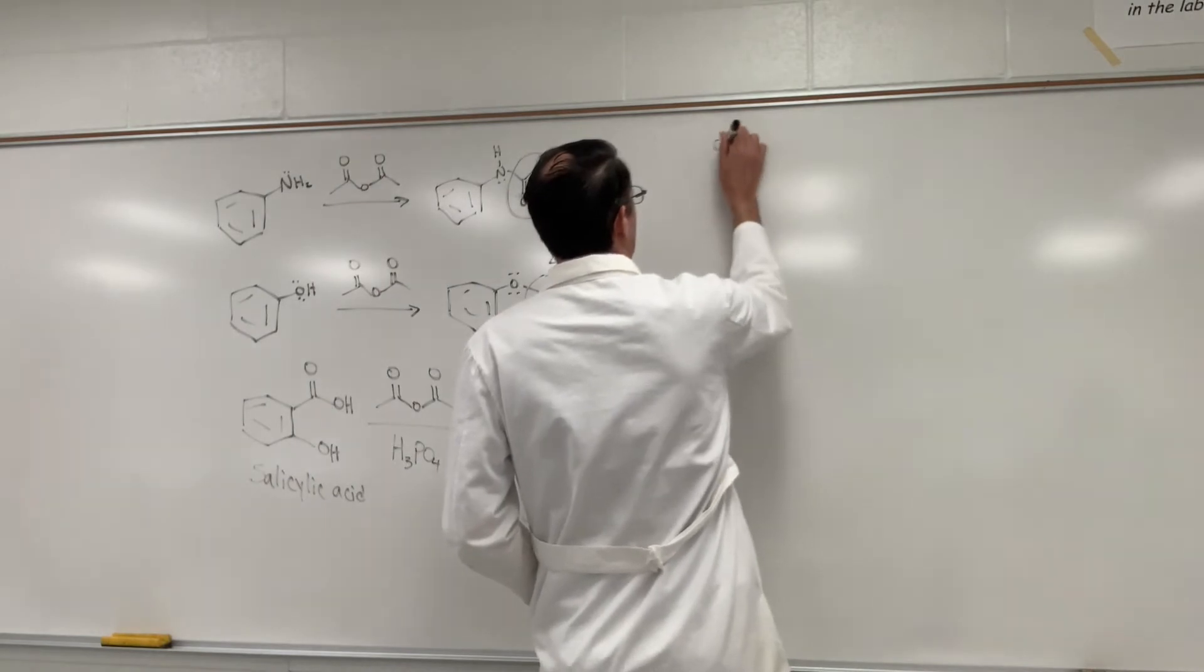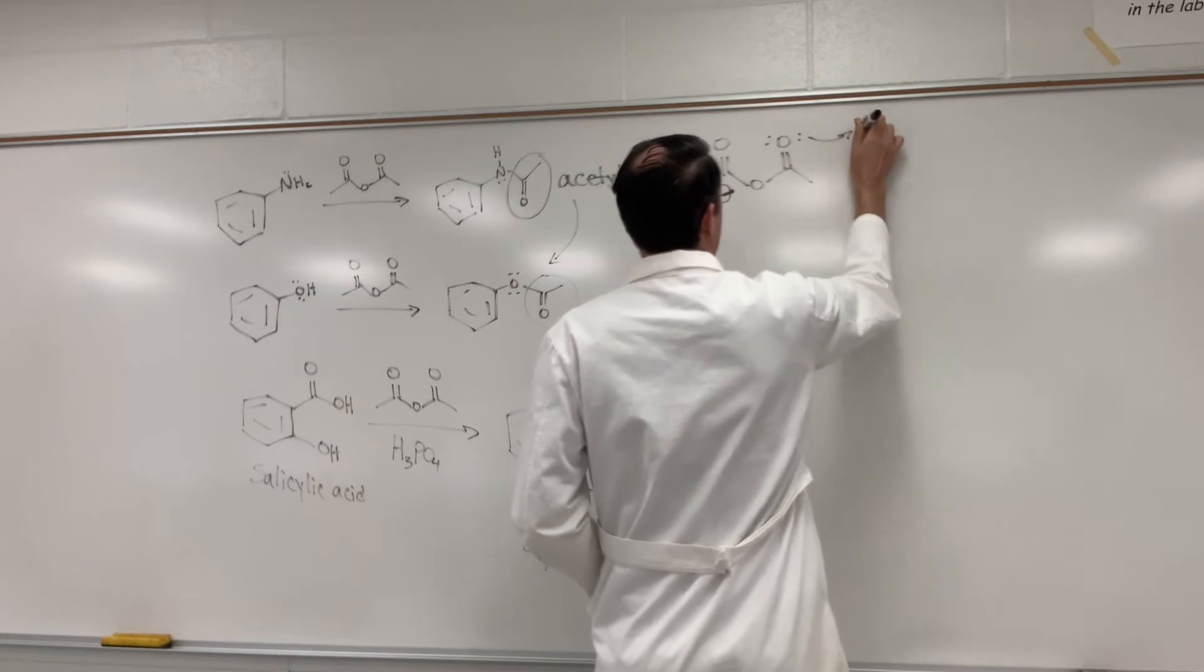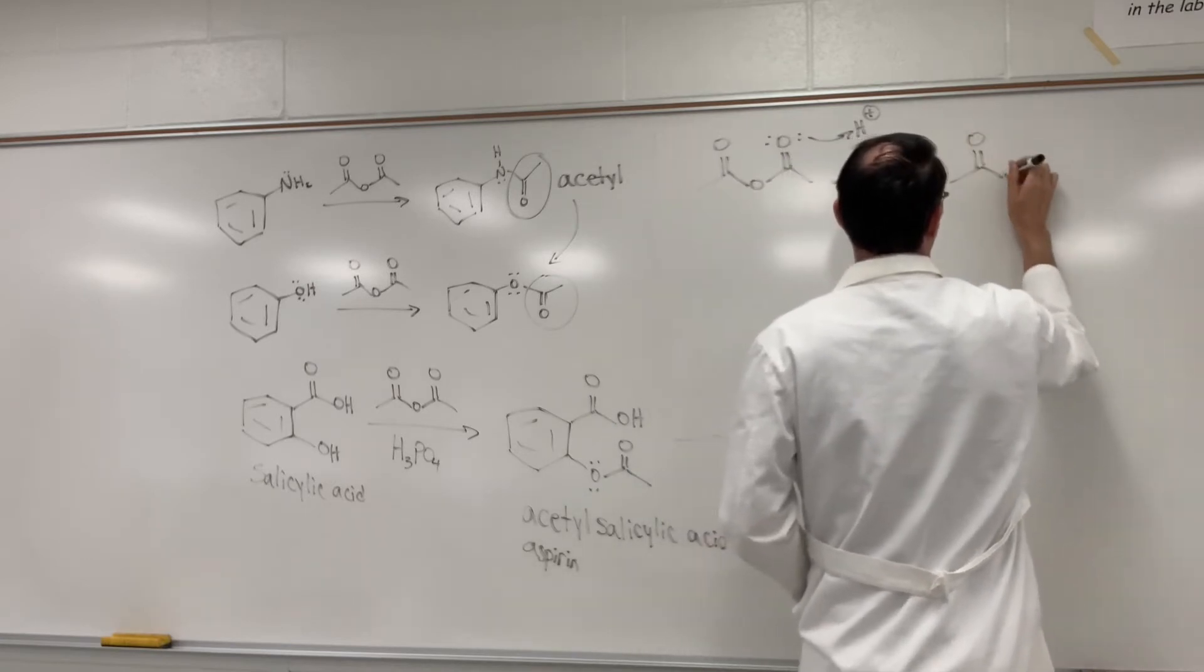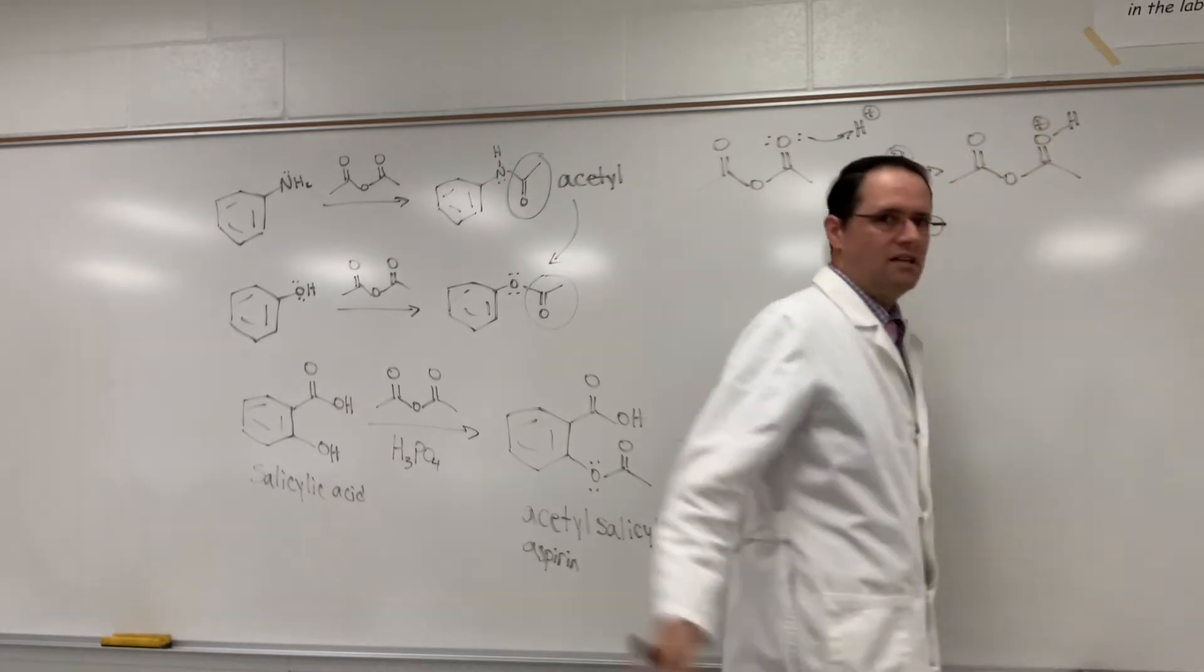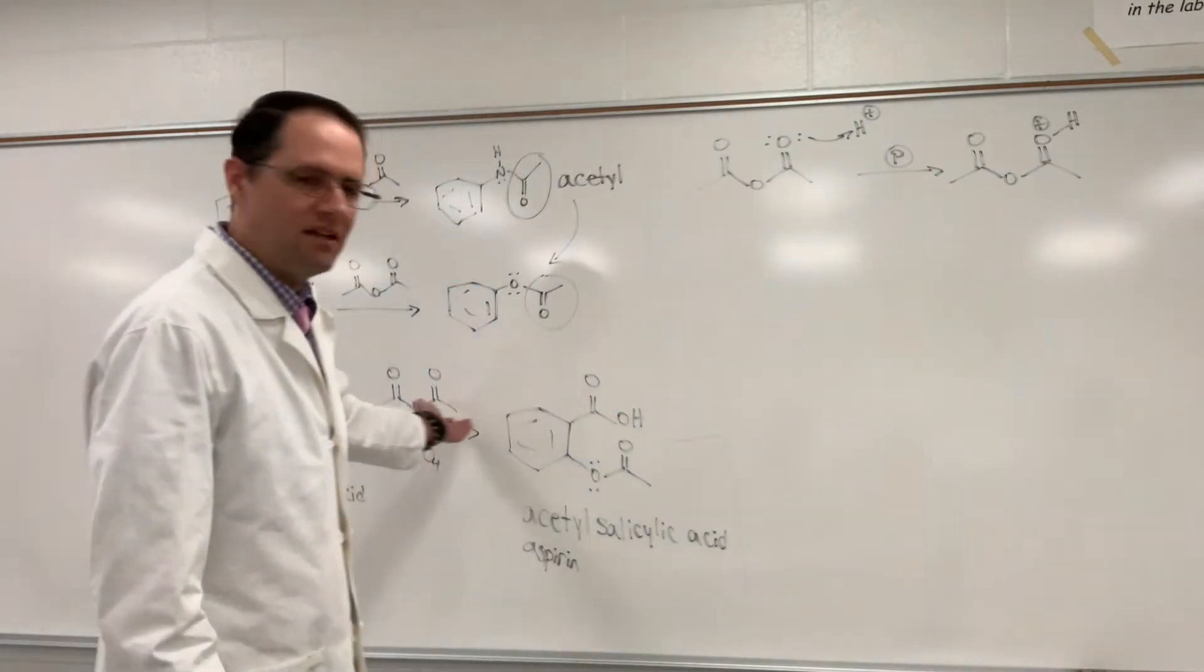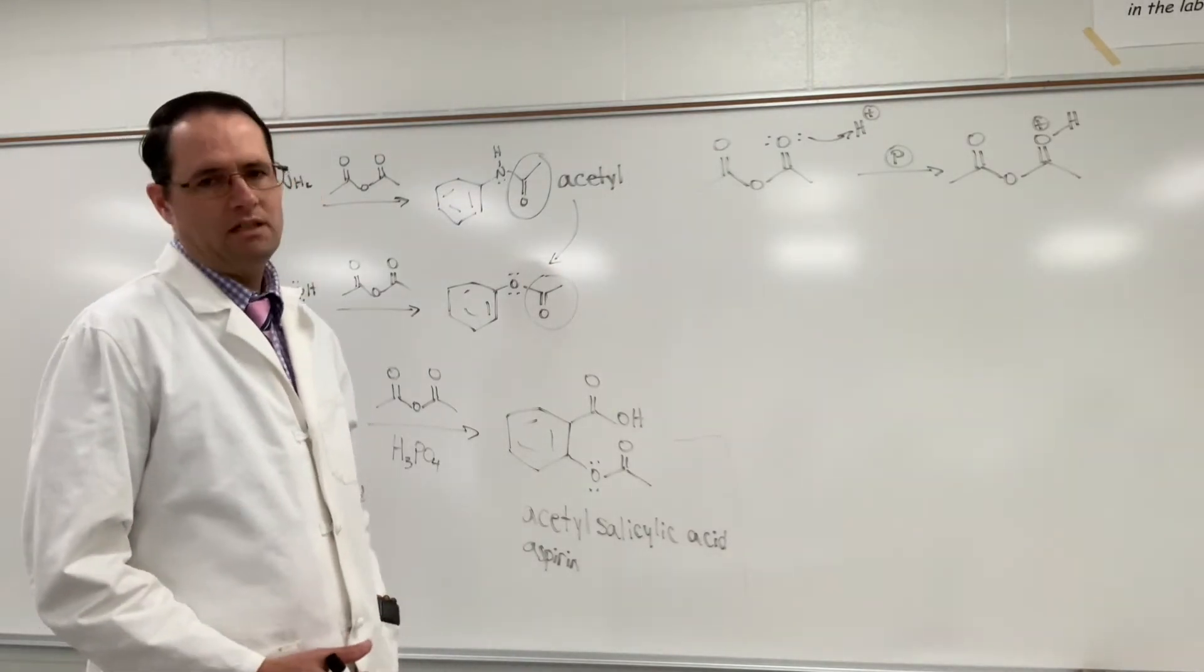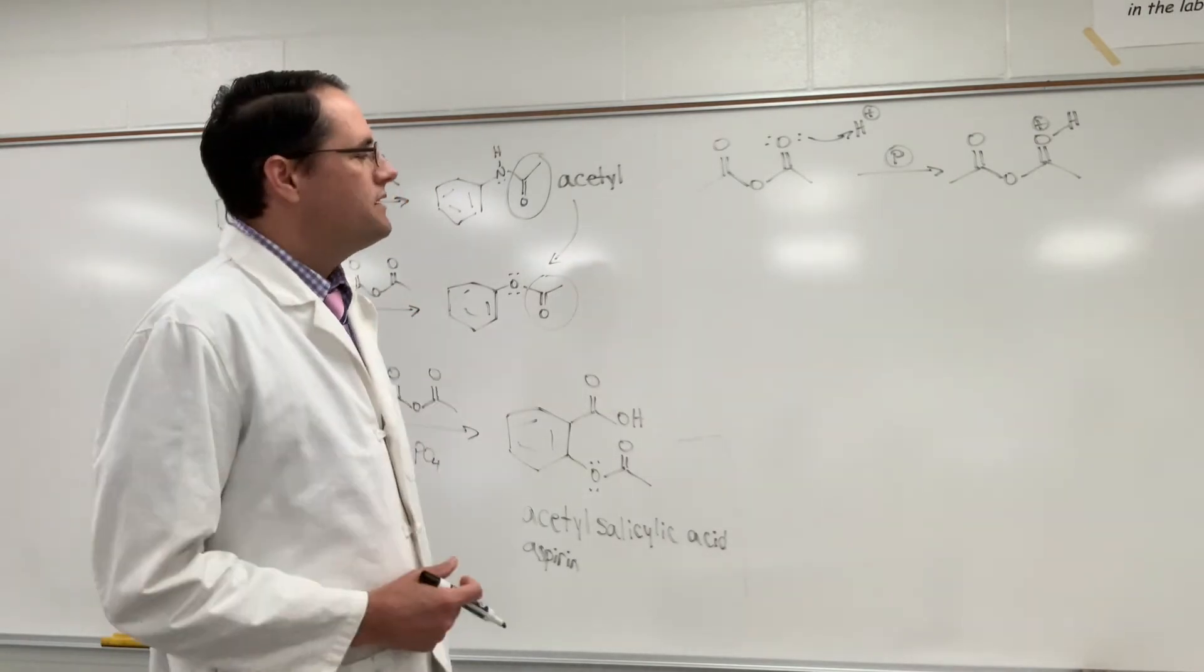First we have acetic anhydride and we want to protonate this carbonyl here. Recall again two things. You always want to use acid in the first step of your reaction if it's a catalyst and present. And the other thing is you want to always protonate the carbonyl oxygen. This enhances the leaving group ability and electrophilicity of that molecule there.